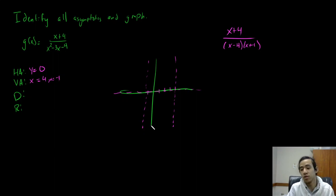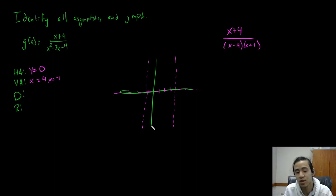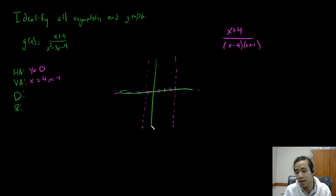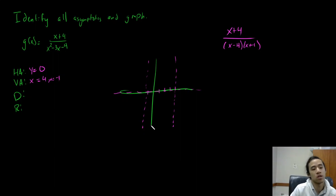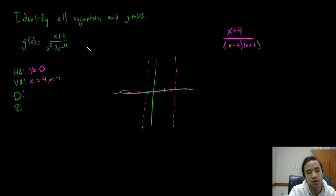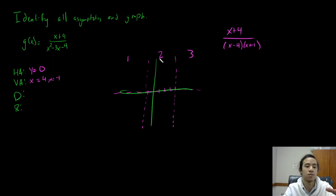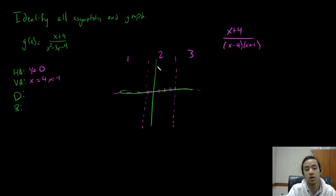Now what we have to do — it just kind of sucks — basically we have to plug in one or two points in every single region and just graph by following the asymptotes. I'm just going to graph one point in each of the regions. This would be region 1, region 2, region 3, split up using the vertical asymptotes.